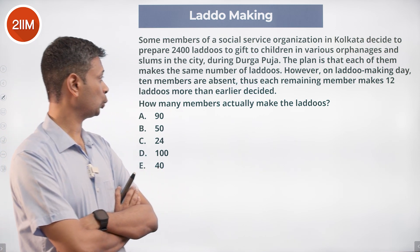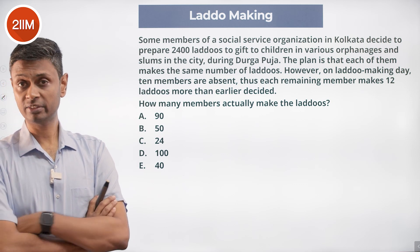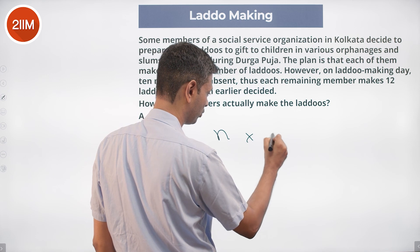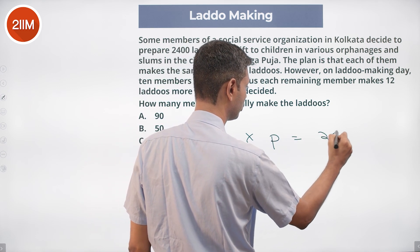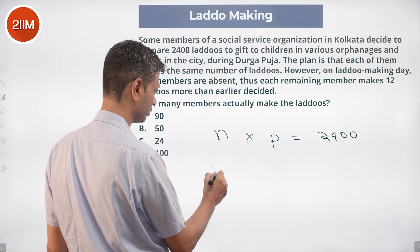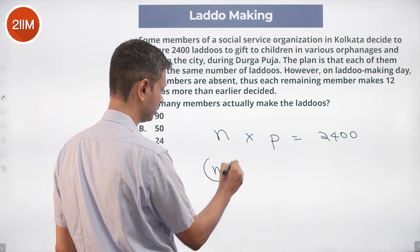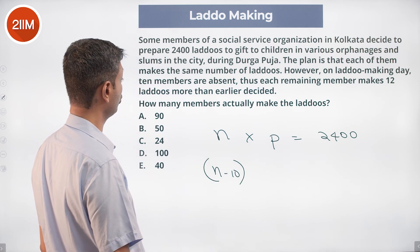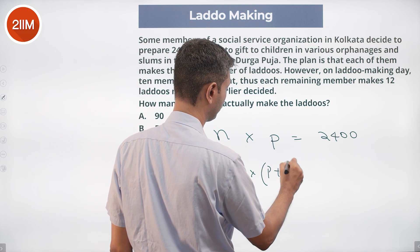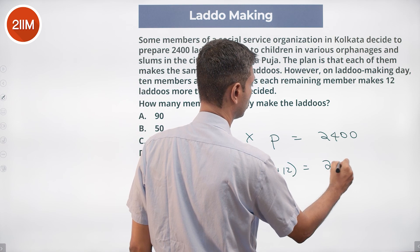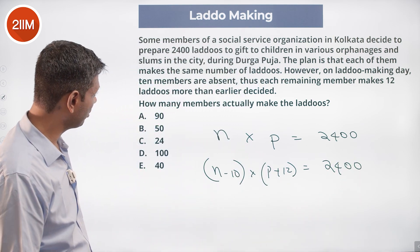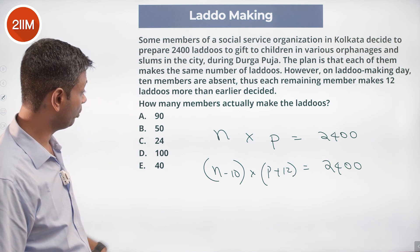So the equation is: number of members × number of laddus = 2400. With 10 members absent, it becomes (N - 10) members, and each of them had to produce 12 more laddus, so (N - 10)(P + 12) = 2400 as well.